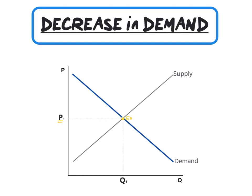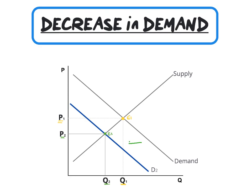A decrease in demand is illustrated by a leftward shift of the demand curve. The new equilibrium point is at E2 with the corresponding price P2 and quantity Q2. If demand decreases, price will decrease from P1 to P2 and quantity will decrease from Q1 to Q2.